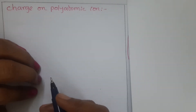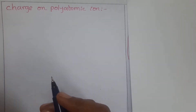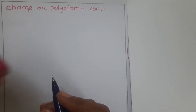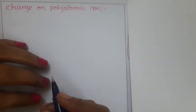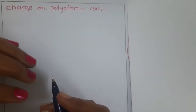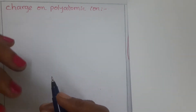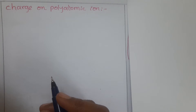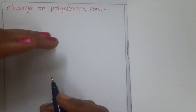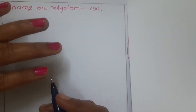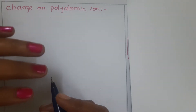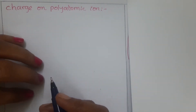Suppose we take examples like nitrate NO3, SO4, and PO4. Students may get confused in writing the charge on a polyatomic ion — whether to write minus 1, minus 2, or minus 3. Don't worry, I am here to clear your doubts.